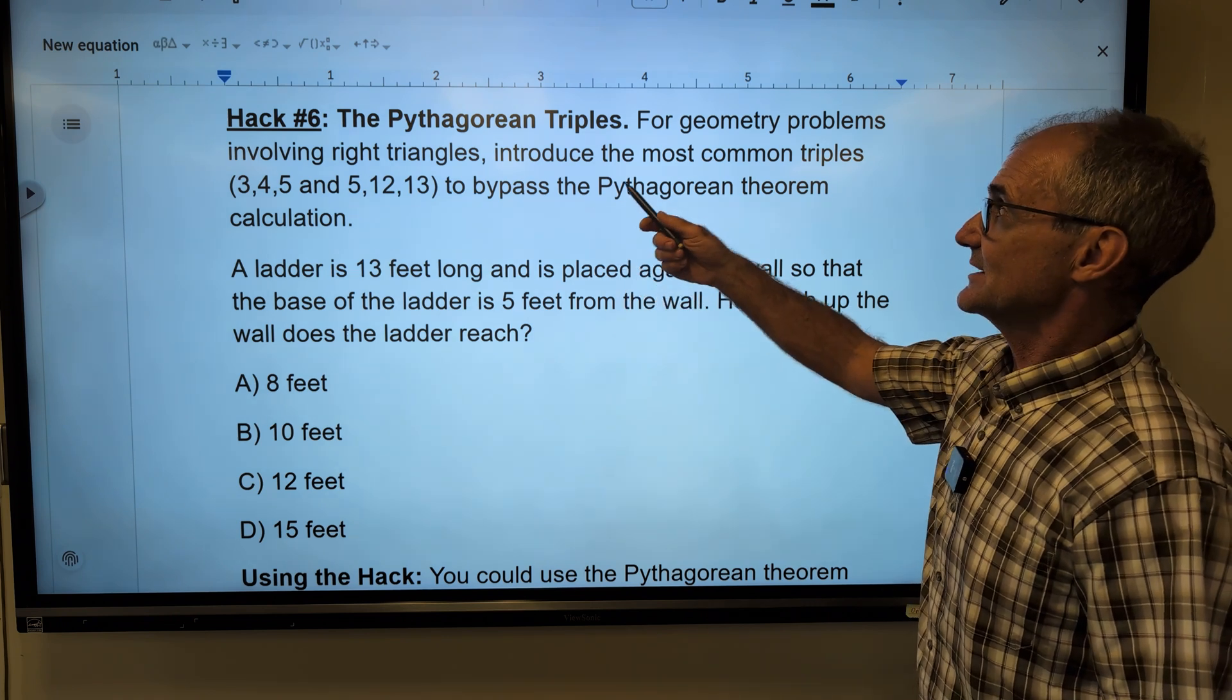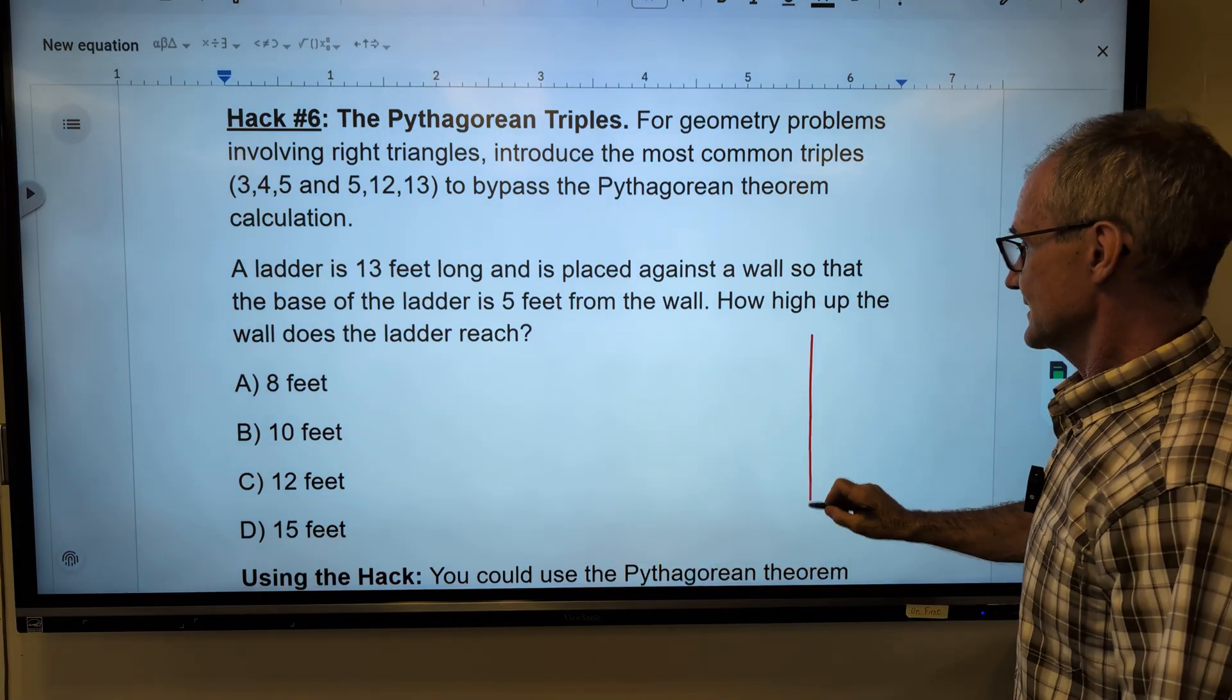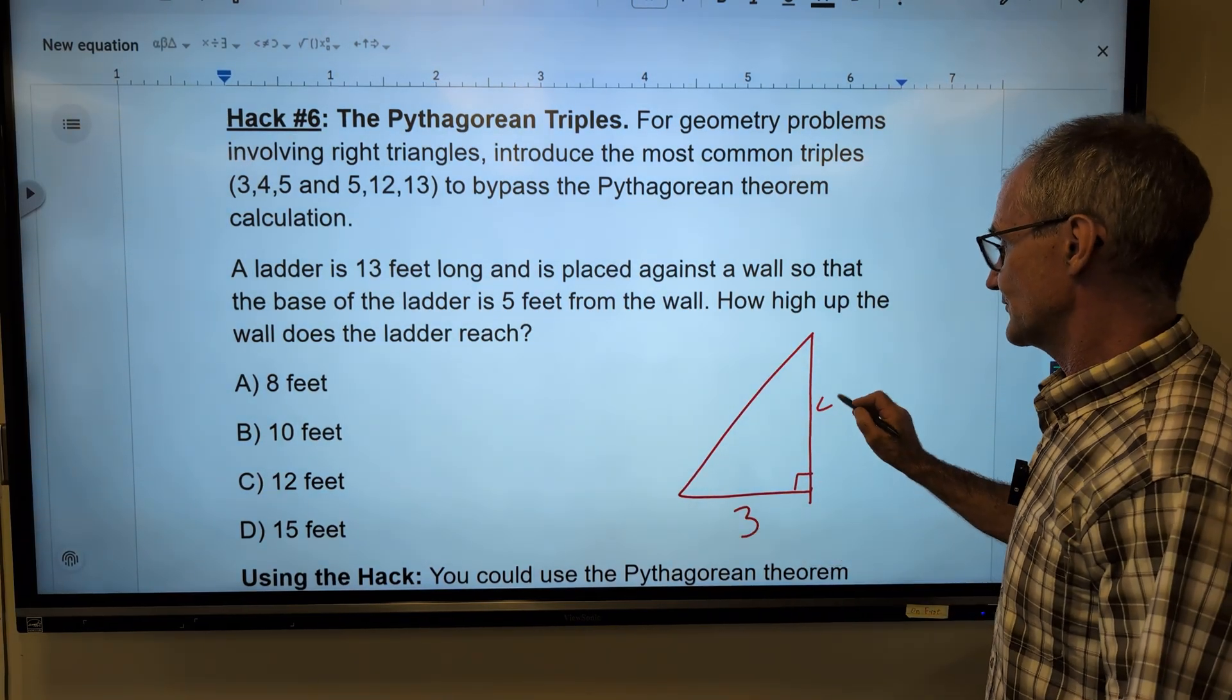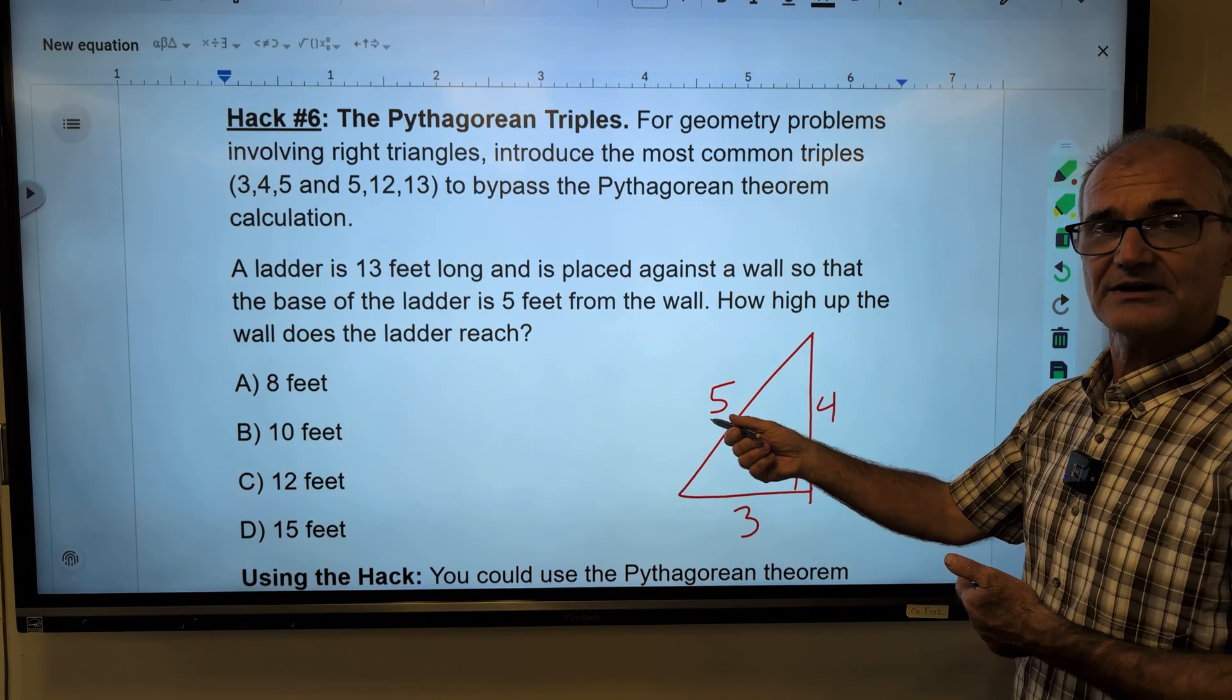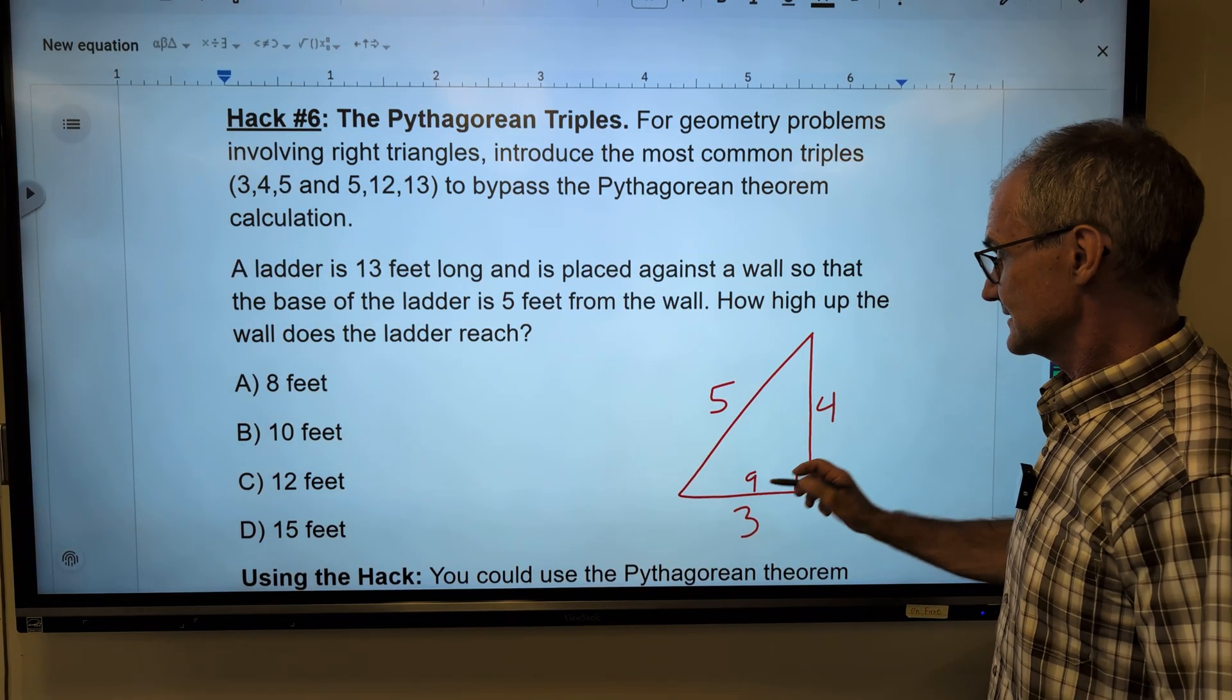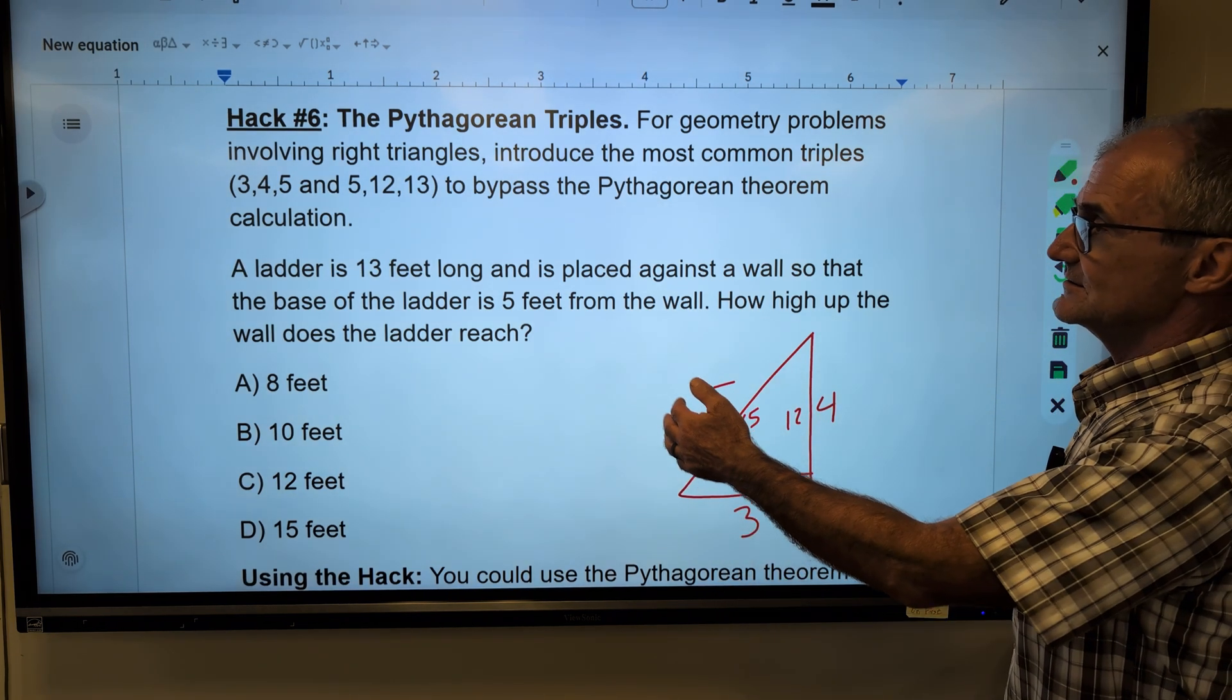Hack number six, the Pythagorean triples. So the Pythagorean theorem is A squared plus B squared equals C squared. That only works in a right triangle, but there are a couple of triangles that you should know. One is three squared plus four squared equals five squared. Nine plus sixteen equals twenty-five. But every ratio of those is, well, if I multiply this by three, nine. If I multiply this by three and this by three will work as well, nine, twelve, fifteen. So they're asking you to do this problem.